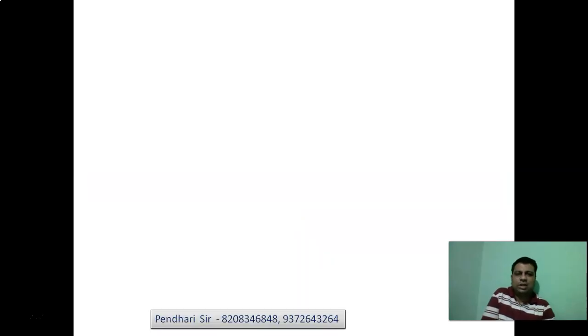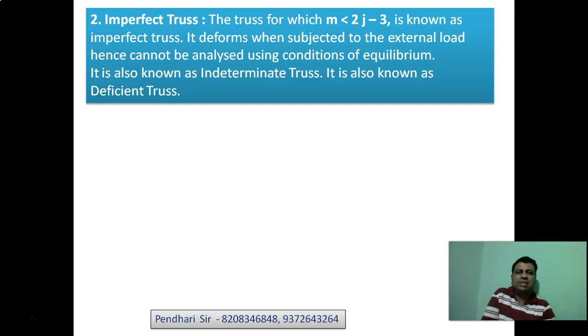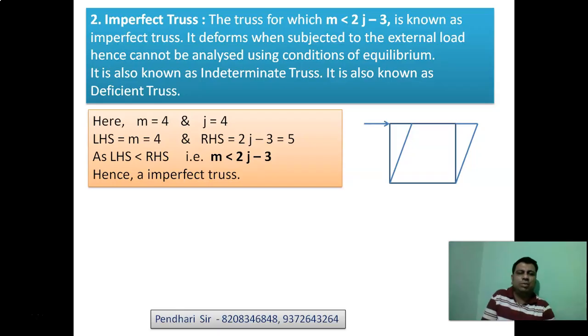The other type is imperfect truss. The truss for which m is less than 2j minus 3 is known as imperfect truss. This truss is deformed on application of external load. Therefore, it cannot be analyzed by conditions of equilibrium. It is also known as indeterminate truss. Take for an example, a rectangular structure. The number of members is 4, joints is 4. m equals 4, 2j minus 3 equals 5. 4 is less than 5 and therefore it is imperfect truss.